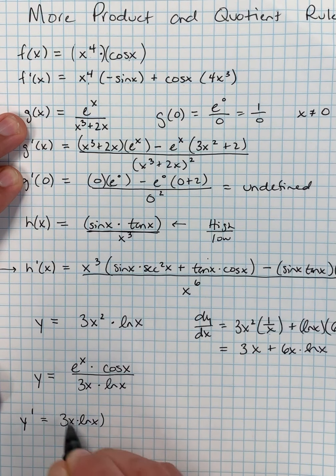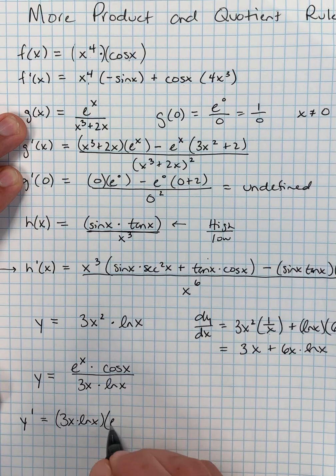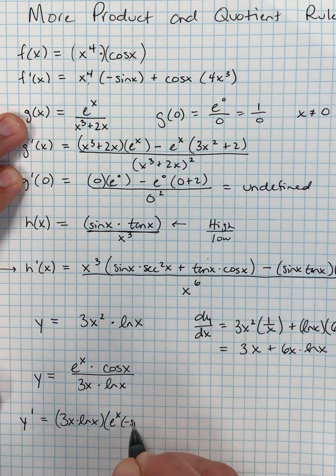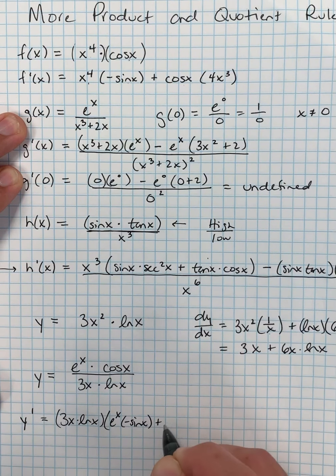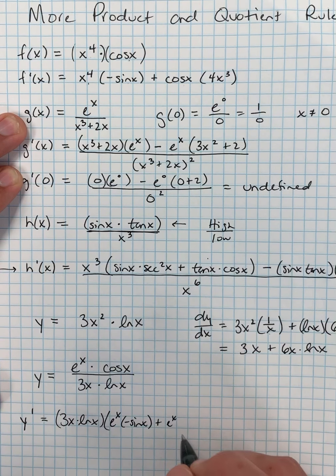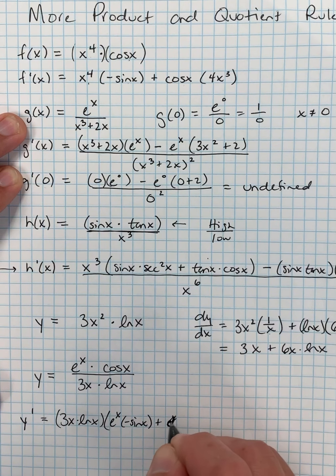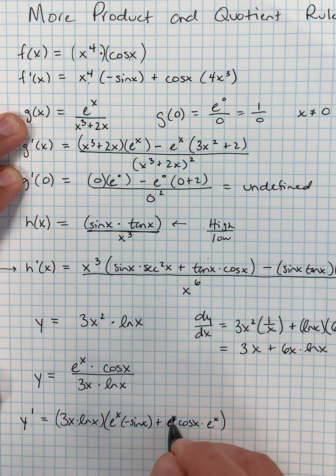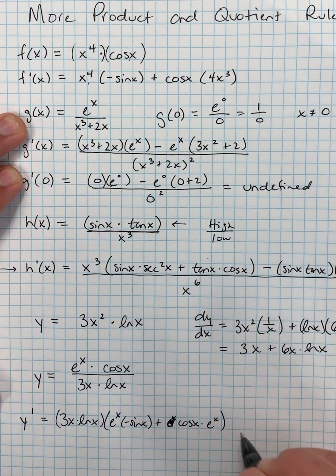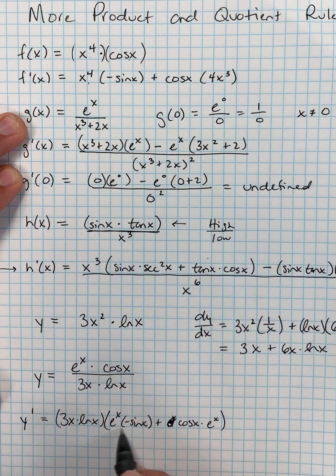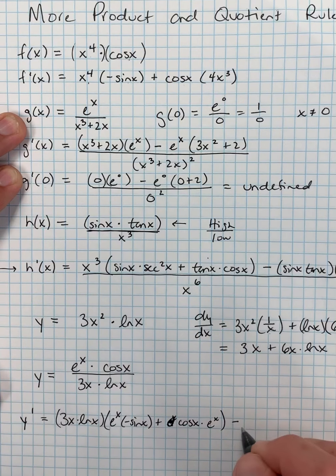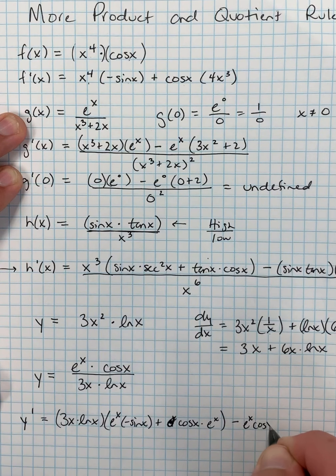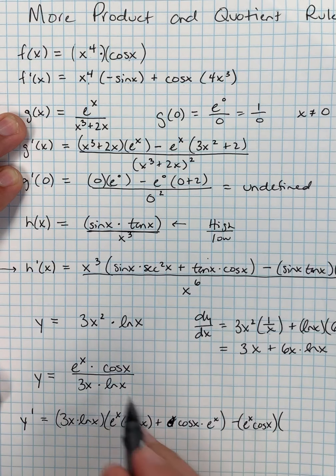We're going to find y prime. We'll use y prime as our notation here for the derivative this time. And away we go. So low, d high, which is 1, d2, plus 2, sorry, 2, d1. That's why you're in pencil, I suppose. So we have low, d high, which was a product rule, minus high,